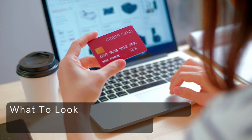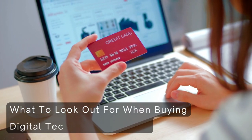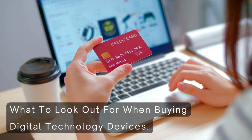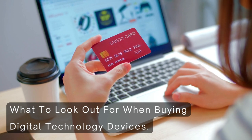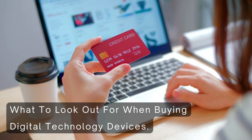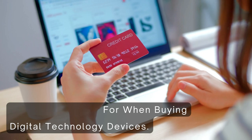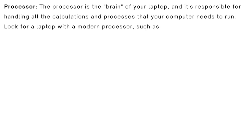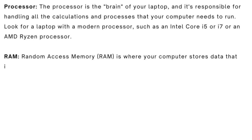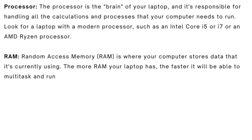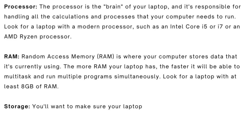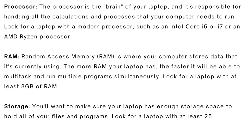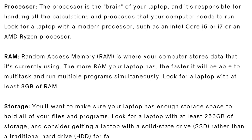Now, like I promised, I'll explain what you need to look out for before you buy your computer — specifically a laptop or desktop. If you're looking to get a new Windows laptop for your digital literacy journey, the first thing on the list is the processor. The processor is the brain of your laptop and is responsible for handling all calculations and processes. Look for a laptop with a modern processor such as an Intel Core i5 or i7, or an AMD Ryzen processor.